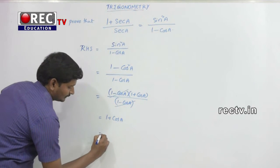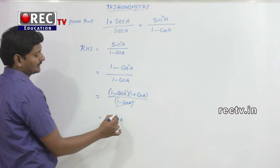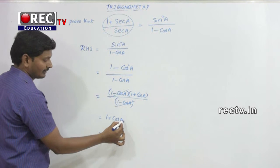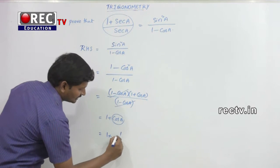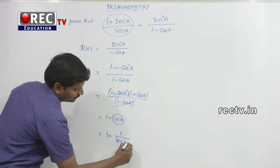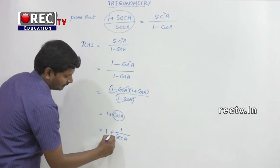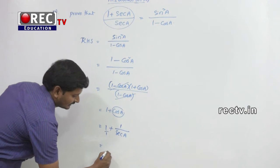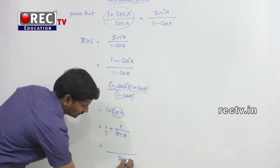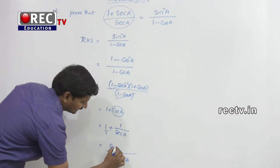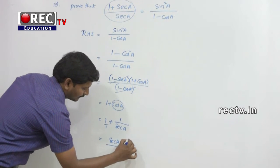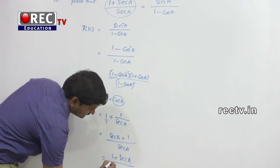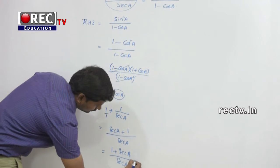Now we need to express this as LHS in terms of secant. We convert cos(a) to 1 by sec(a). So 1 plus cos(a) becomes 1 plus 1 by sec(a). Taking the LCM of 1 and sec(a), which is sec(a), we get sec(a) in the numerator plus 1, that is 1 plus sec(a) divided by sec(a). That is equal to the LHS. Hence proved.